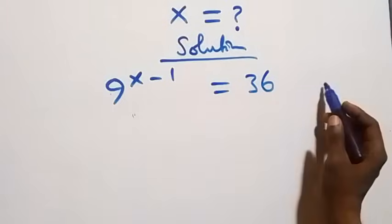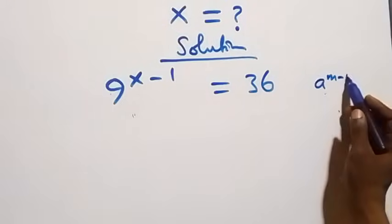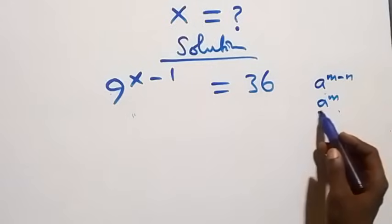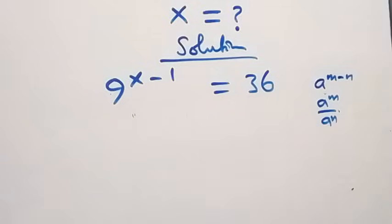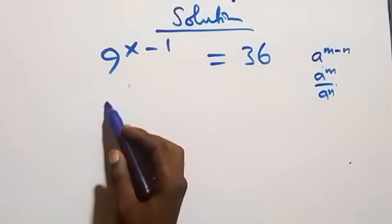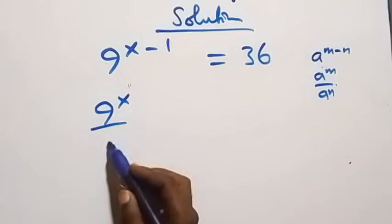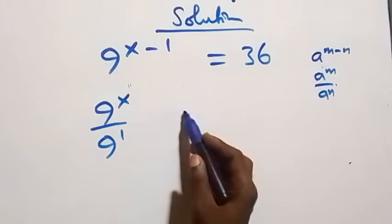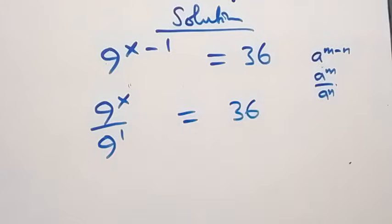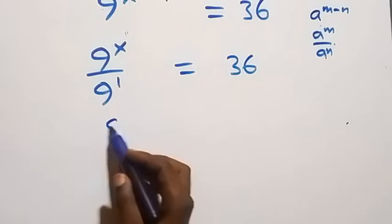This follows from the law of indices. When we have a raised to power n minus n, which can be written as a raised to power n over a raised to power n. So we can write this as 9 raised to power x over 9 raised to power 1, equals to 36.